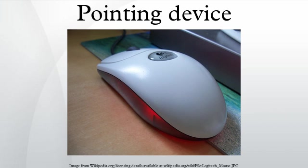Trackball: A trackball is a pointing device consisting of a ball housed in a socket containing sensors to detect rotation of the ball about two axes, similar to an upside-down mouse. As the user rolls the ball with a thumb, fingers, or palm, the pointer on the screen will also move. Tracker balls are commonly used on CAD workstations for ease of use, where there may be no desk space on which to use a mouse. Some are able to clip onto the side of the keyboard and have buttons with the same functionality as mouse buttons. There are also wireless trackballs which offer a wider range of ergonomic positions to the user.